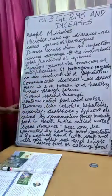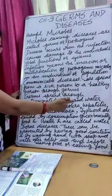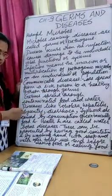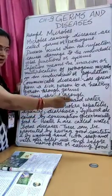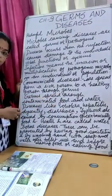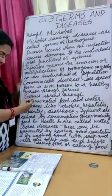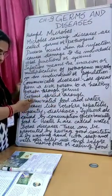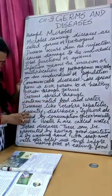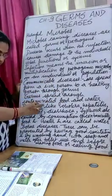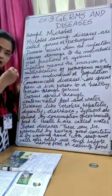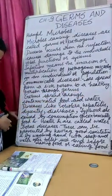What type of diseases are caused? Diseases like cholera, hepatitis, dysentery, diarrhea, and typhoid are caused by consumption of contaminated food and water. Because they are caused by contamination of food and water, they are called water-borne diseases.